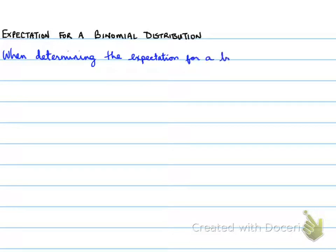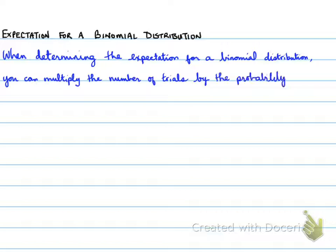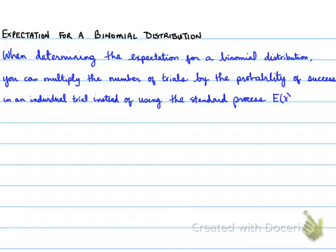Expectation for a binomial distribution. When determining the expectation for a binomial distribution, you can multiply the number of trials by the probability of success in an individual trial instead of using the standard process: E(X) = np.